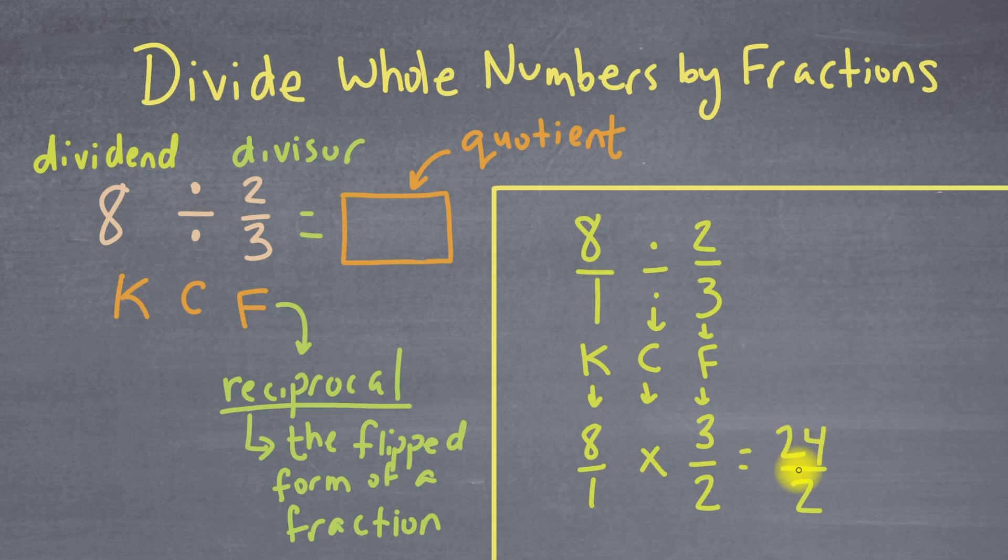This 24 over 2 is improper. What we have to do is we're going to have to turn it into a mixed number by taking the 24 and dividing it by 2. And that's not too bad. Let's set it up over here.